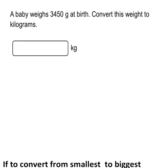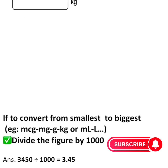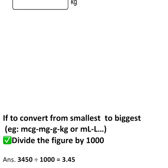To convert grams to kilograms, we divide the figure by 1000. The rule is: when converting from smallest to biggest — mcg to mg to g to kg, or mL to litres — you always divide by 1000. So we take 3450 and divide by 1000, giving us 3.45. We do not add the unit again because it's already been provided in the question.